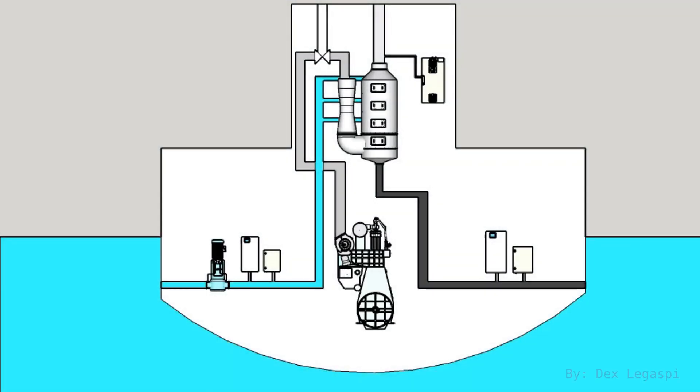Basic Concept of EGCS. When the vessel is using compliant fuel, the scrubber can be stopped. Hence, the exhaust gas is being bypassed to the atmosphere.